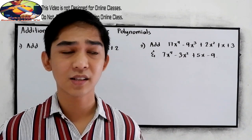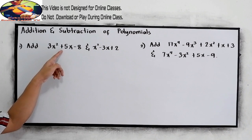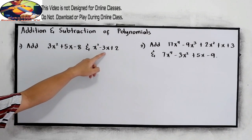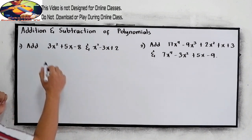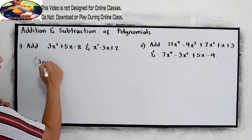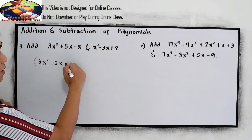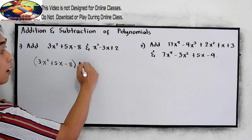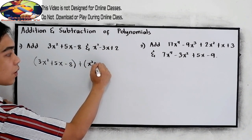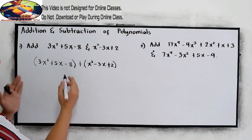Now let's try this example. Add 3x squared plus 5x minus 8 and x squared minus 3x plus 2. So let's rewrite: we have 3x squared plus 5x minus 8 plus x squared minus 3x plus 2. We need to add.